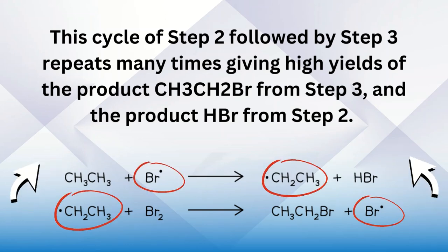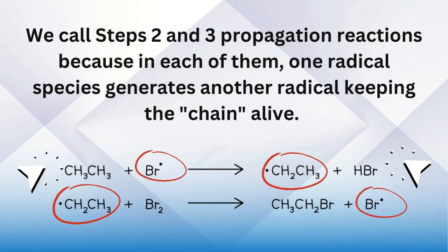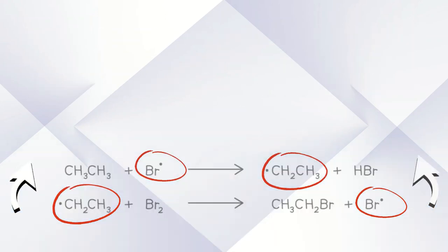We call steps two and three propagation reactions because in each of them, one radical species generates another radical, keeping the chain alive.